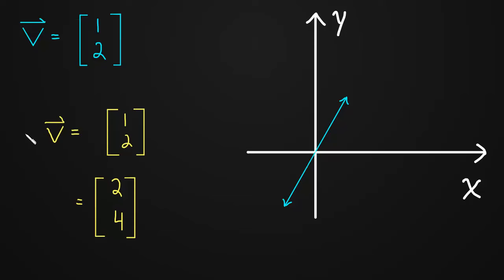If we take negative 1 times v, which I'll just abbreviate as negative v, this is negative 1 times 1, 2, which simply turns out to be negative 1, negative 2. And it flips the direction of v.